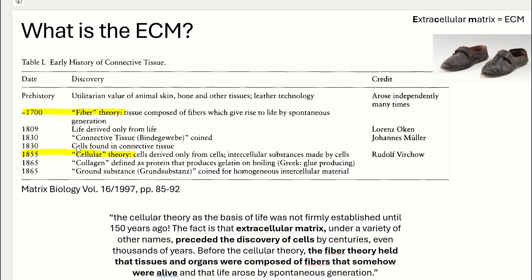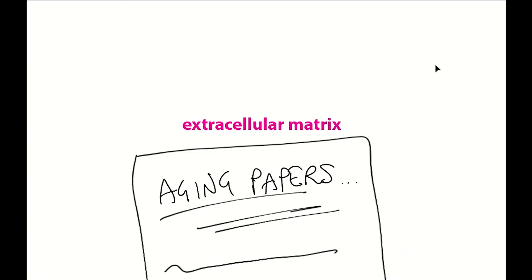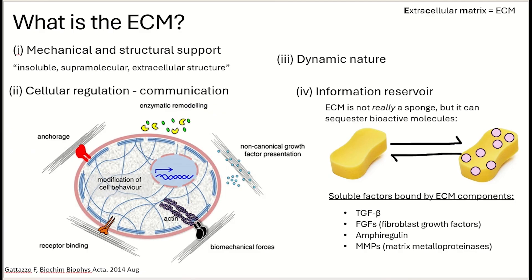It was only once the dogma that all cells derive only from cells was established, that the question arose: if life comes from cells, where do the ECM components come from? And to backtrack a little more, what actually is the ECM? Well, the ECM isn't just an important structural and mechanical component found outside cells. There are in fact three other main features of the ECM.